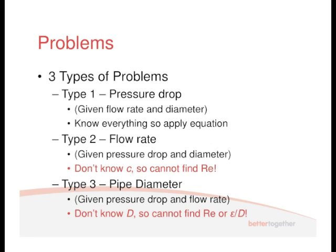Type 3 is where you've got to work out your pipe diameter. You're given the pressure drop and the flow rate, but you don't know D. So not only can you not work out your Reynolds number, but you also can't work out your relative roughness — so you've got no idea what the friction factor could be.